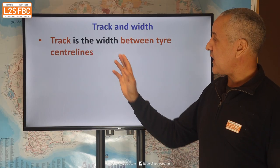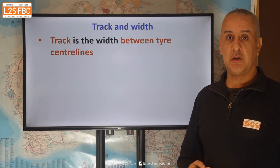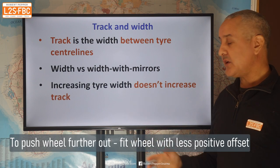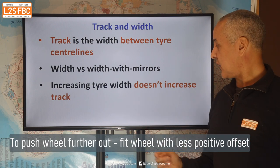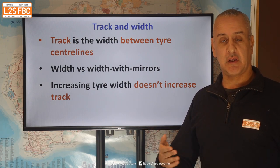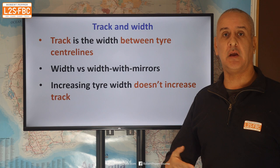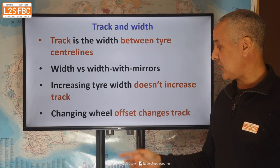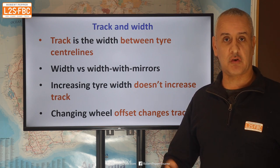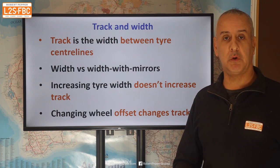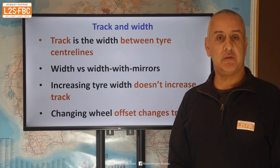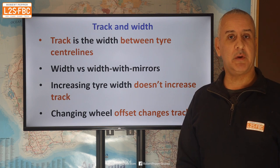To summarize: track is the width between two tyre centre lines, and you've got width versus width with mirrors. Increasing tyre width alone doesn't increase track, but it might increase the width of the car if the tyres stick out — in which case you'll need flares. Changing wheel offset will change the track; normally you'd increase the track to get extra clearance for wider wheels. I hope you found this video useful — drop any questions in the comments, and thanks for watching.